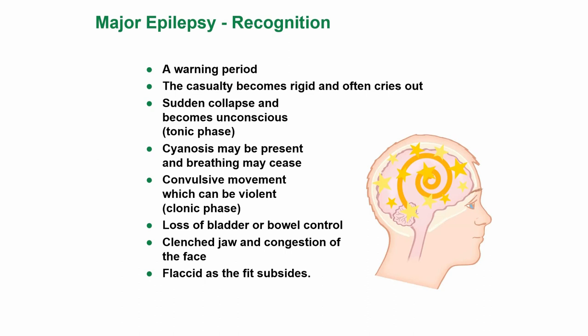Major epilepsy recognition: there is usually a warning period. The casualty becomes rigid and often cries out, then suddenly collapses unconscious — this is the tonic phase. Cyanosis may be present and breathing may cease. Convulsive movement, which can be violent, follows — this is the clonic phase. There may be loss of bladder or bowel control, clenched jaw and congestion of the face. The casualty becomes flaccid as the fit subsides.